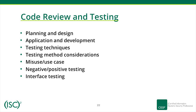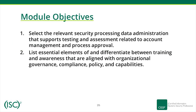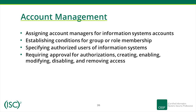Module 3: Security Process Data. Module Objectives: Select the relevant security processing data administration that supports testing and assessment related to account management and process approval. List essential elements of, and differentiate between, training and awareness aligned with organizational governance, compliance, policy, and capabilities. Account Management includes: assigning account managers for information systems accounts, establishing conditions for group or role membership, specifying authorized users of information systems, and requiring approval for authorizations — creating, enabling, modifying, disabling, and removing access.